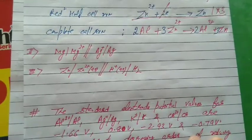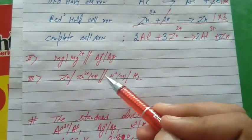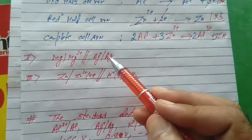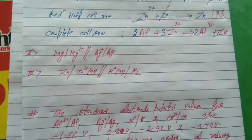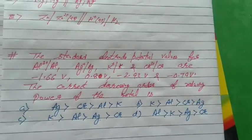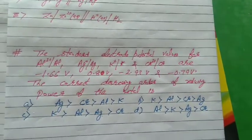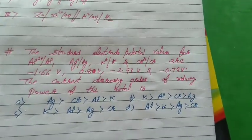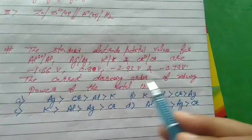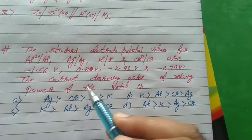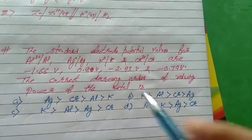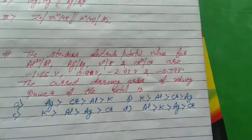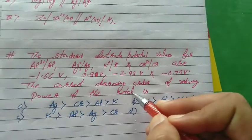After this, students, please practice the second and third examples by yourself: write the oxidation half-reaction, reduction half-reaction, and complete cell reaction. Here is a question from 2020: the standard electrode potential values are given, and you must find the correct decreasing order of reducing power of metals.